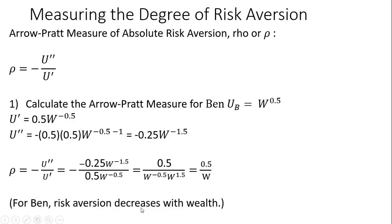For Ben, risk aversion decreases with wealth. As w gets bigger, this denominator gets bigger, and rho will get smaller.